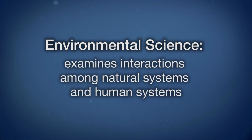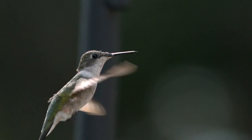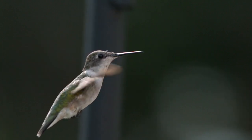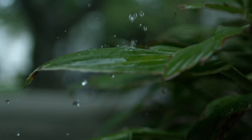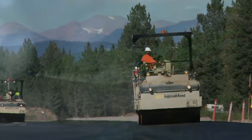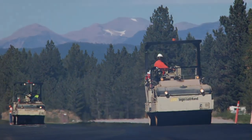Environmental science is the interdisciplinary academic field of study that examines interactions among natural systems and human systems. Environmental science draws on physics, chemistry, and biology. It combines the natural environment and considers environmental problems caused by humans. Every time you or I use a resource such as food, water, energy, or materials, we are interacting with environmental systems.